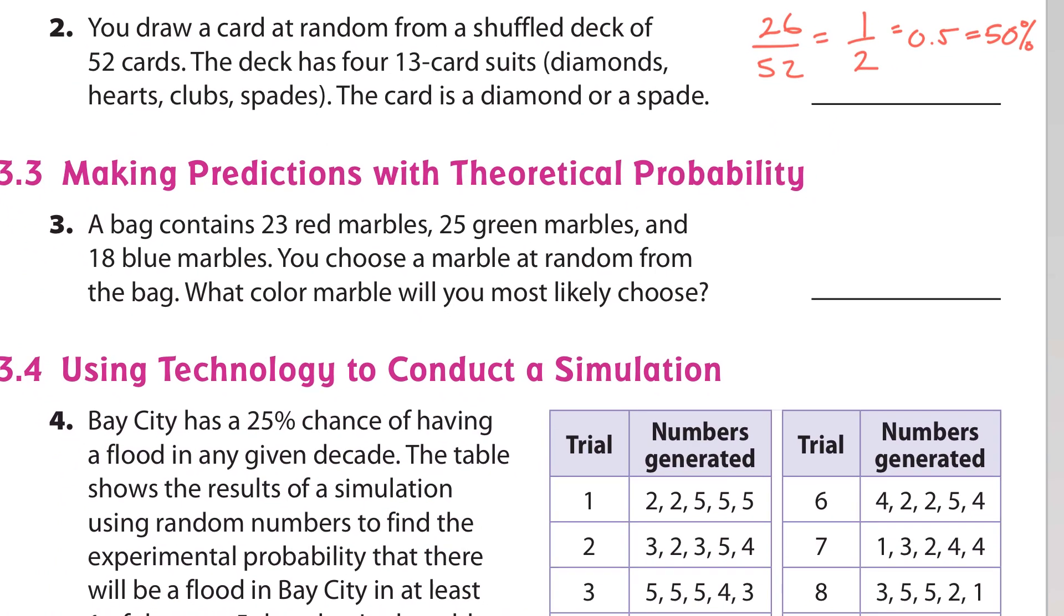Next, making predictions with theoretical probability. A bag contains 23 red, 25 green, and 18 blue marbles. You choose a marble at random from the bag. What color will you most likely choose? You're going to choose green. That's pretty easy. There's more green than there is anything else.